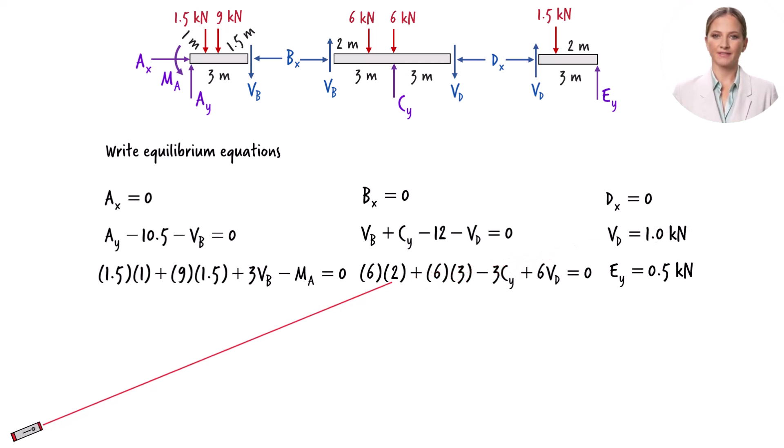Knowing Vd, this equation gives us Cy. Then we can determine Vb from this equation. Vb equals 1 kN.